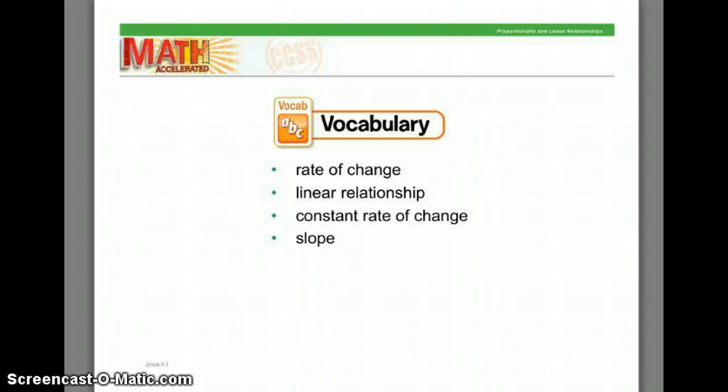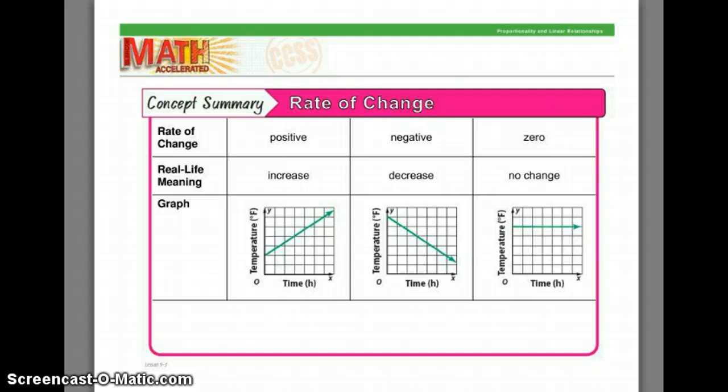Some of the vocabulary we're going to talk about is rate of change, linear relationship, which we already know is a relationship between x and y that forms a line on a graph. It's easy to pick out linear relationships because it has the word line right in it. Constant rate of change just means that we are going to increase or decrease by the same amount. And then the word slope.